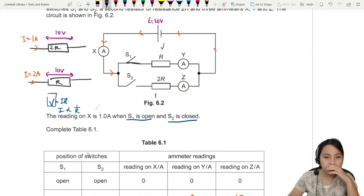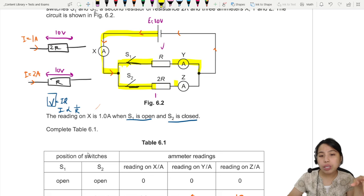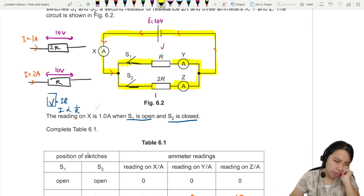Close this switch. Close this switch. Now the current will flow to here. Split. One goes up. One goes down. And then eventually join back. And then go back to the circuit. So there should be readings in everything now. But how does the current change? Moment of thinking. This is number two. This is number three.